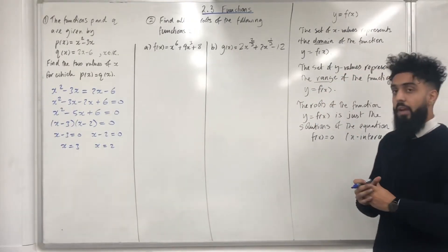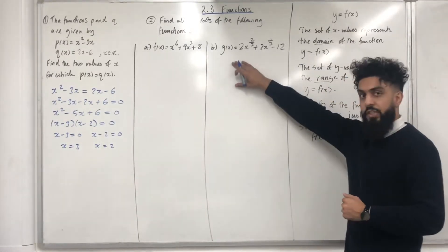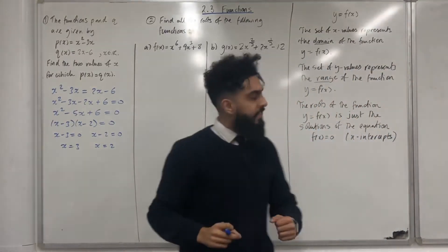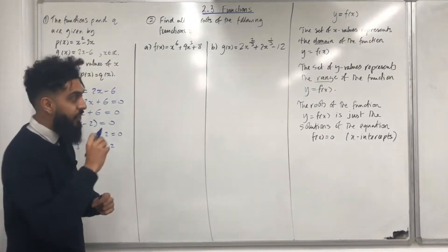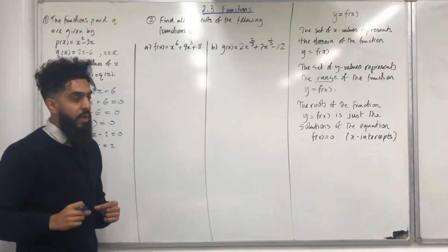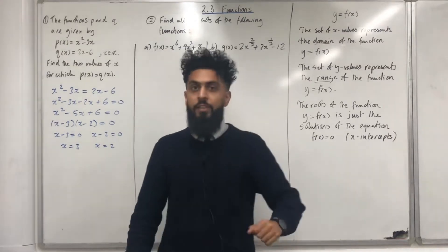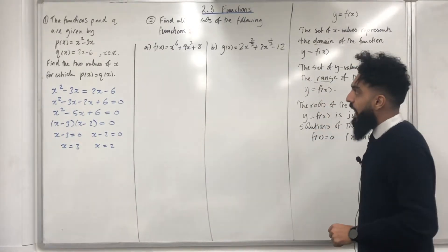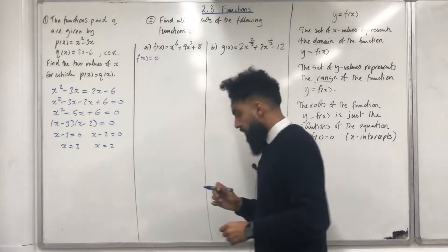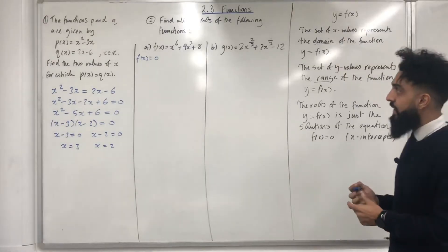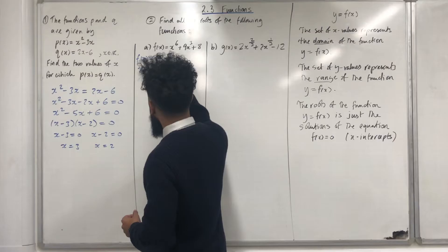Example number 2: find all the roots of the following functions. In part a, we've got the function f of x. In part b, we've got the function g of x. The roots of the function y equal f of x is just the solutions of the equation f of x equal to 0, and these solutions represent x-intercepts. So, let's have a look at the roots for f of x — we need to solve f of x is equal to 0.